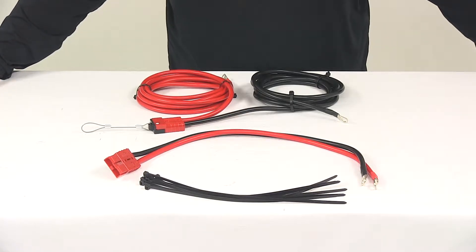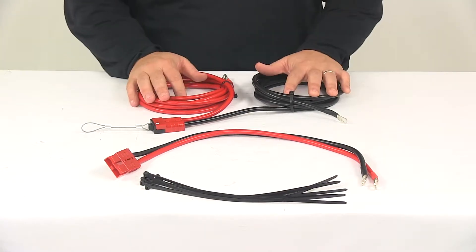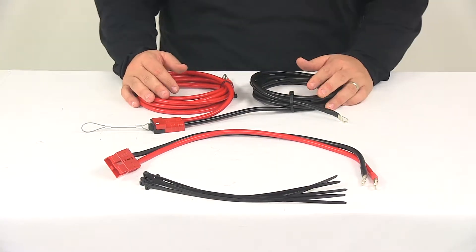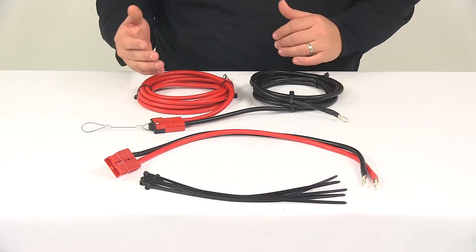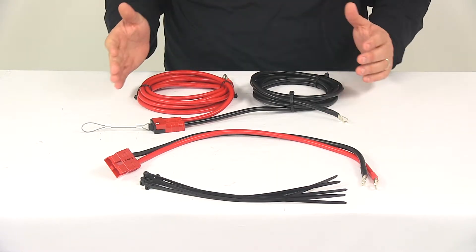Today we're going to be taking a look at the Bulldog Winch Wiring Kit for ATV and UTV Winches. This mounting kit simply connects a winch to a vehicle battery. Very quick and easy to use design.